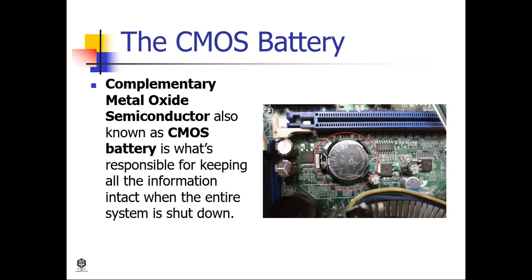The CMOS battery — Complementary Metal Oxide Semiconductor — is what's responsible for keeping all the information intact when the entire system is shut down. All motherboards include a small separate block for CMOS, which is kept alive by a battery known as a CMOS battery even when the PC's power is off. This prevents reconfiguration when the PC is powered on. The CMOS battery is removable and can be removed to reset the BIOS after a failed update, or if you overclock your RAM beyond its capabilities.